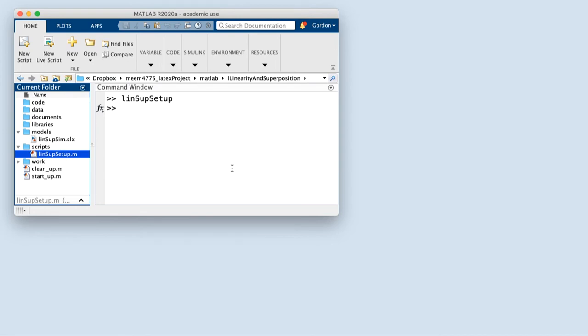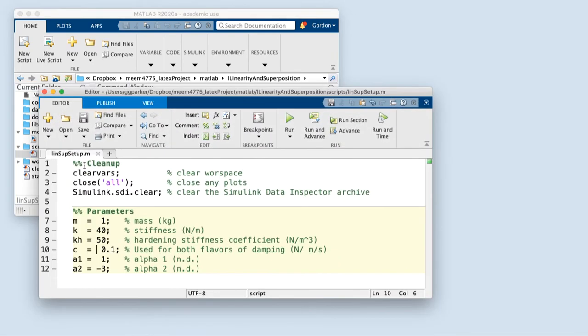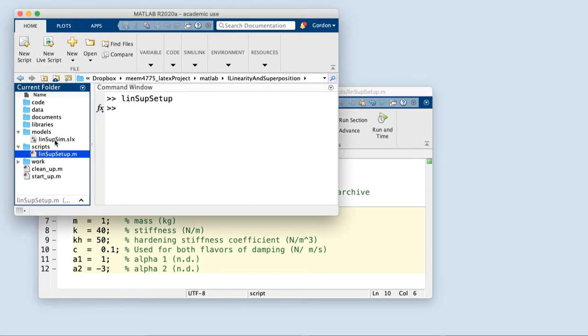Here's MATLAB. Let me bring this up. Here's a little setup script. It has just 12 lines to it. Cleans up the workspace a little bit. Clears out the simulink data inspector. We'll be using that to analyze the results of our quote-unquote experiments. And then here we just set up some parameters, the mass, the stiffness, and the alpha 1, alpha 2. I picked those to be 1 and negative 3, but they could be anything. Now let's have a look at the model.